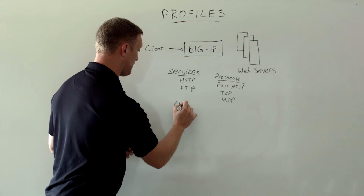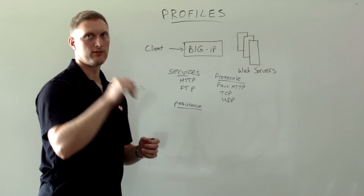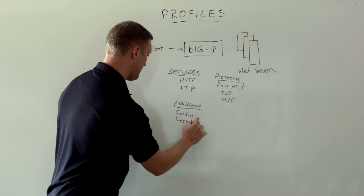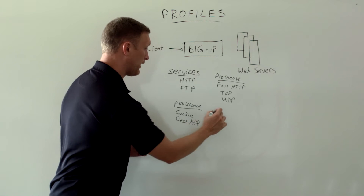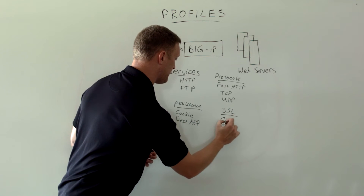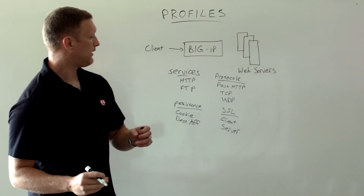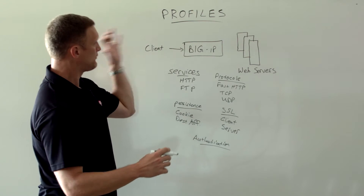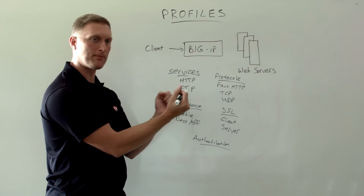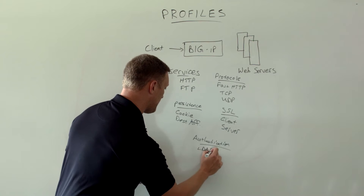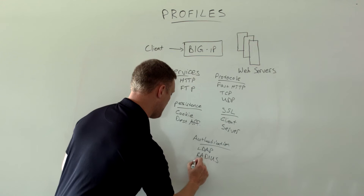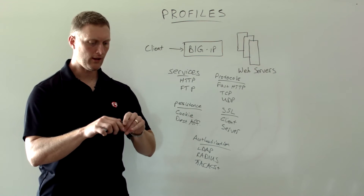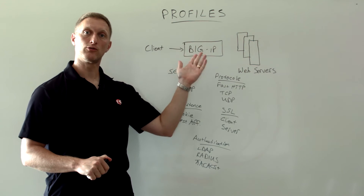There are also persistence profiles. You may have cookie persistence, or destination affinity. There are SSL profiles — you have client and server SSL profiles. There's authentication. This gives you an idea of all the different types of traffic that come through here and all the different ways you can modify, manipulate, and really optimize this traffic. For authentication, you may have things like LDAP, RADIUS, or TACACS+. That's not an exhaustive list, but it gives you an idea of some of the different profiles you can create to apply to virtual servers on your BIG-IP.